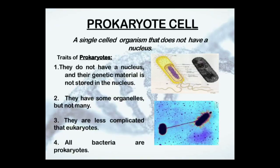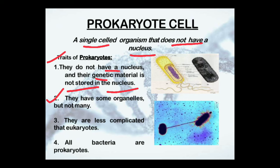Let us go into the detail of the prokaryotic cell. It is a single-celled organism that does not have a nucleus, as we have already discussed. The traits of prokaryotes are that they do not have a nucleus and their genetic material is not stored in the nucleus; rather it is stored in the nucleoid. They have some organelles, but not many — they are less complicated than eukaryotes. All bacteria are prokaryotic.